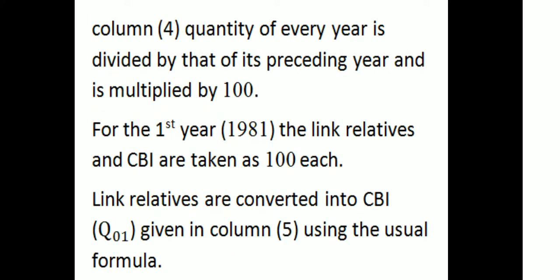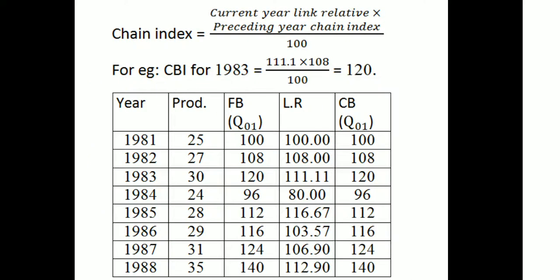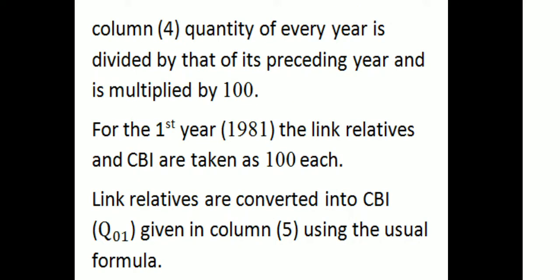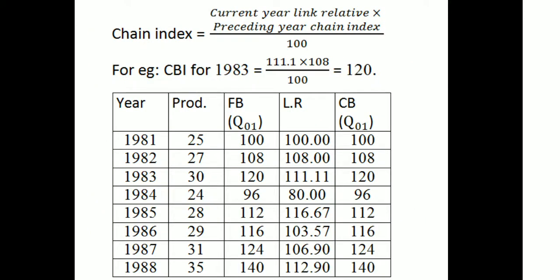For calculating Link Relatives (LR) in column 4, the quantity of every year is divided by that of its preceding year and multiplied by 100. For the first year 1981, the Link Relative and Chain-based Index are both taken as 100. Link Relatives are then converted into Chain-based Index numbers in the 5th column using the formula: Chain Index = (Current Year Link Relative × Preceding Year Chain Index) / 100.